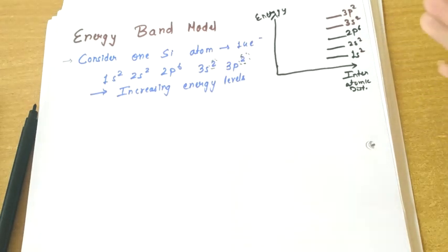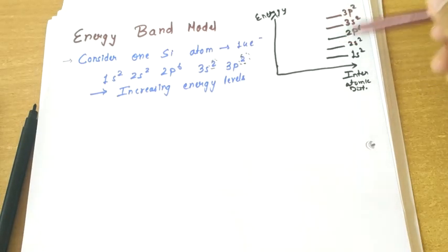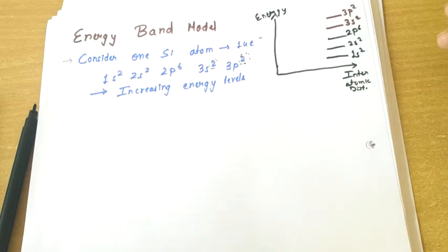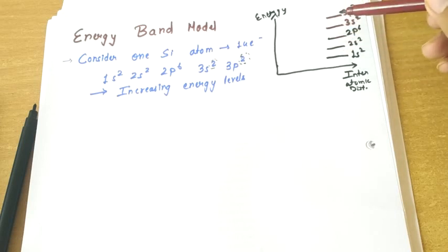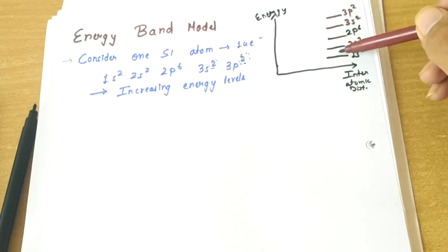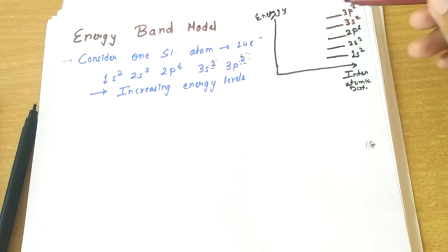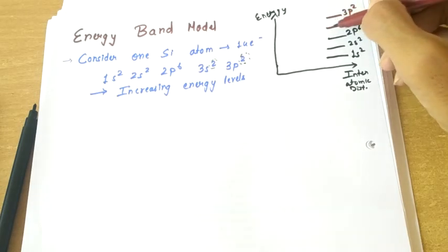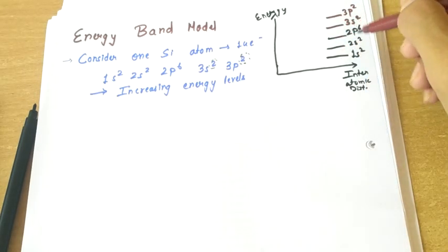As per Bohr's model, energy has quantum states — in an atom, only specific quantum states of energy are possible. All energy states are not possible; electrons will have some specified state. Inside a silicon atom, these are the different energy levels, and any energy level in between is not possible.